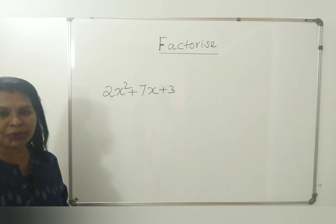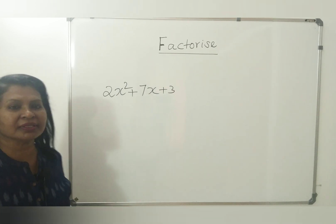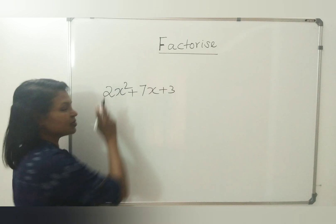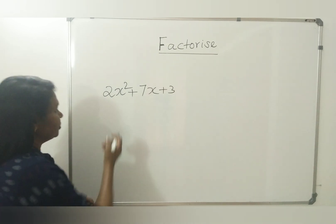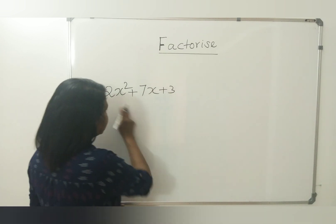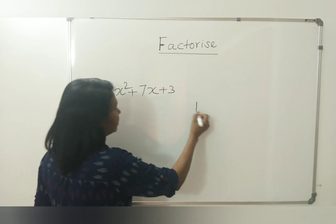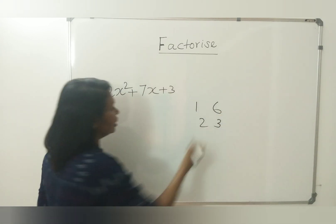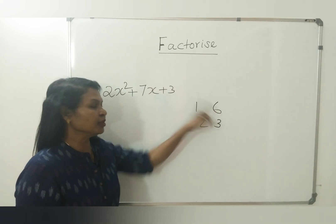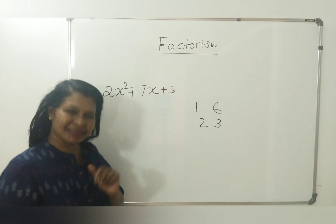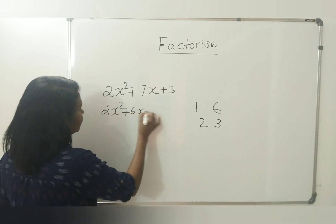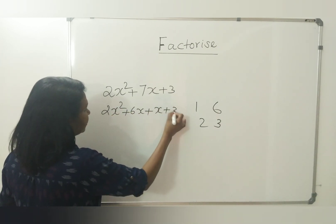Next example: 2x squared plus 7x plus 3. This is a simple question because all signs are positive. Product is 6 and sum is 7. The factors of 6 are 1, 6 and 2, 3. Numbers with sum 7 are 6 and 1. So you write: 2x squared plus 6x plus 1x plus 3.